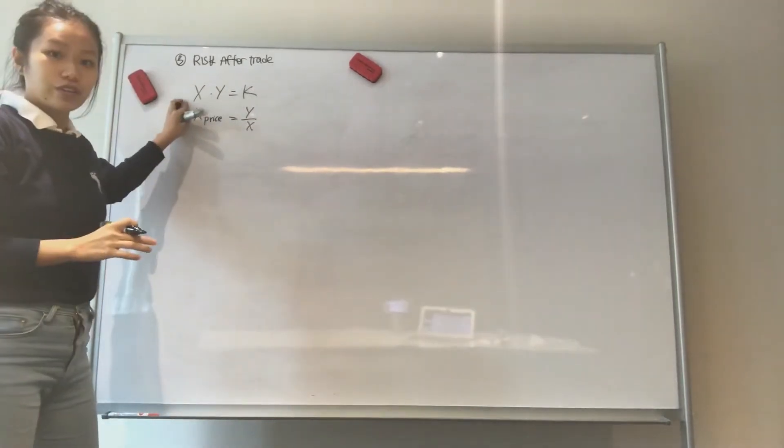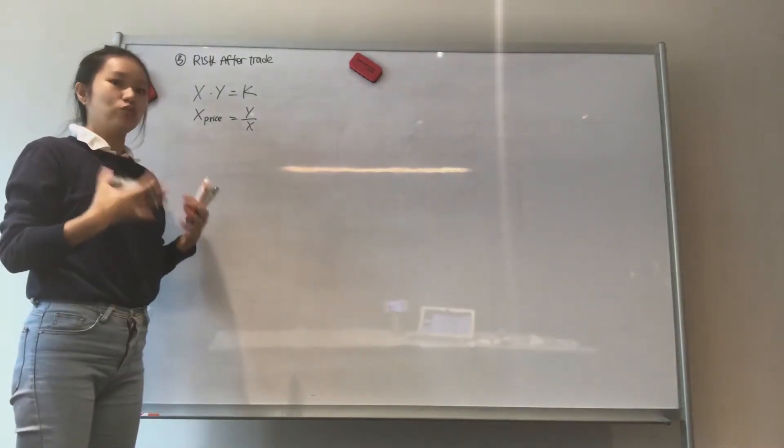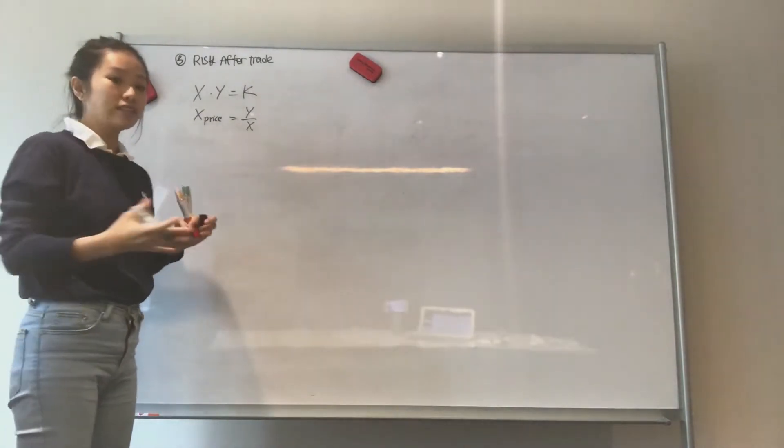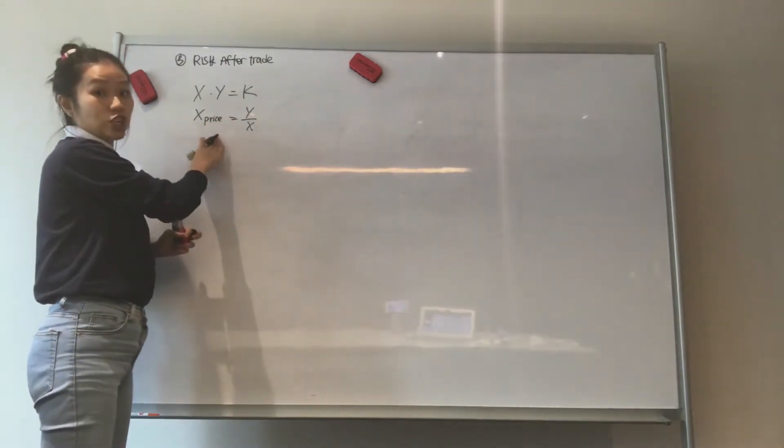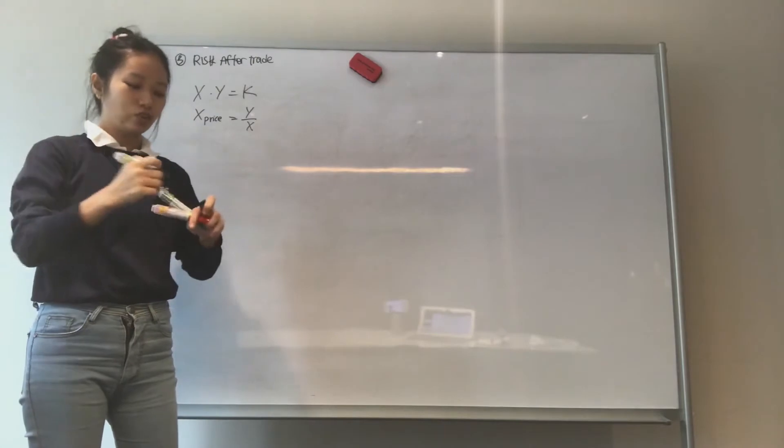So if we combine them together, we get this new formula for what is the expected returns or expected price given the price keeps changing. Just now what we did was we fixed the price, right? This is 1 ETH, how much LISA tokens you're going to get.